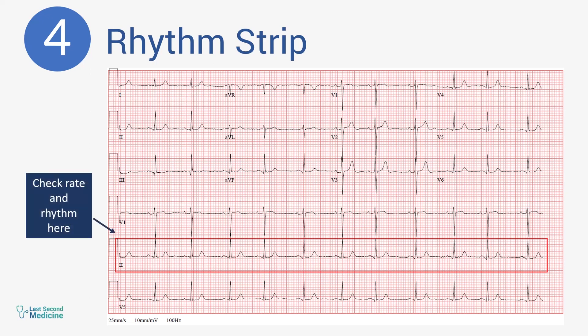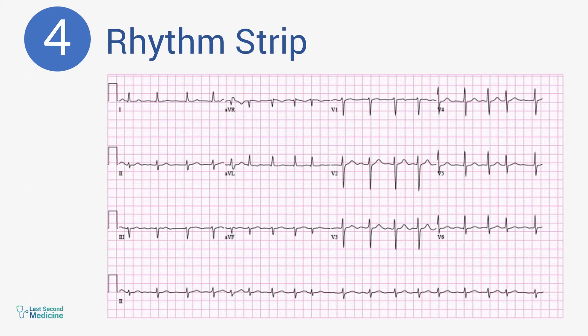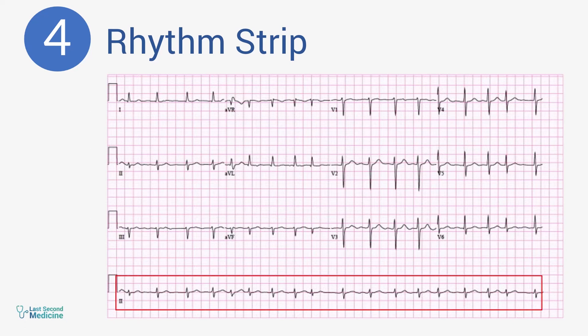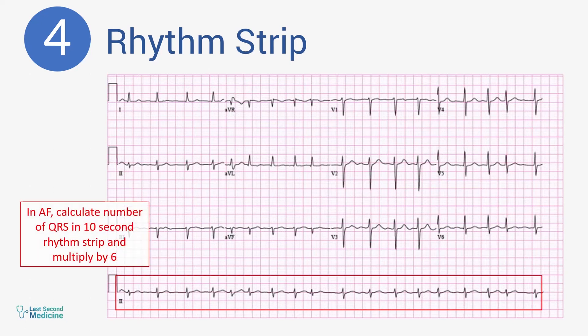Number four: rhythm strip. Make it a habit to check the rhythm strip to calculate rate and check rhythm. Lead II is the rhythm strip by convention and it is a 10-second strip. All modern ECG machines record the rhythm strip automatically at the bottom of the 12-lead ECG paper. In situations where older machines are used, ask to record a long lead II or rhythm strip manually. The rhythm strip is especially useful in calculating heart rate in atrial fibrillation, where the number of QRS complexes are counted in this 10-second strip and then multiplied by six to get heart rate per minute.